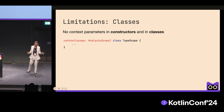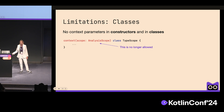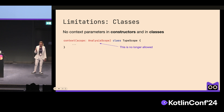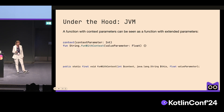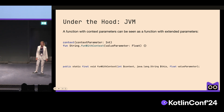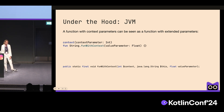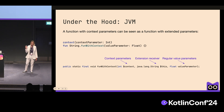Regarding limitations: it is not possible to use context parameters in constructors or in classes. This was allowed in the previous design iteration, but we cannot promise we will reintroduce this feature. You can try using the operator function 'invoke' with context parameters instead. For the JVM, a function with context parameters is represented as a function with additional parameters, similar to how extension receivers work. The particular parameter order is: context parameters (if present), extension receiver (if present), then regular value parameters.